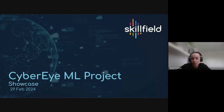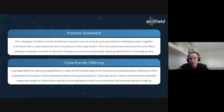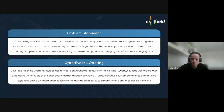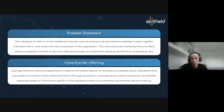The Cyber Eye machine learning project is an extension of the Cyber Eye CISO dashboard project, which was developed to provide a 360 view of an organisation's security posture via Elastic. The problem statement for this ML project is that the catalogue of metrics on the CISO dashboard requires a lot of manual analysis and specialised knowledge to assess the security posture, which is time-consuming and adds complexity to decision making.